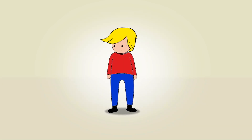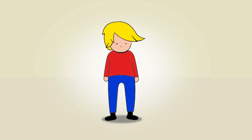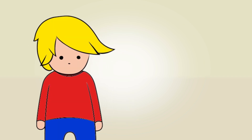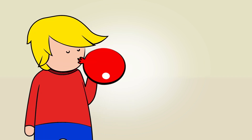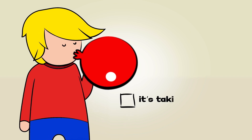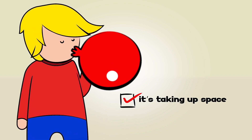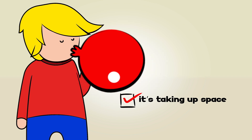Air, like liquid and solid, has mass and can also take up space. Just imagine a balloon. You fill it up with air. The air inside it is taking up space — that's why it expanded. A balloon filled with air has more mass than an empty balloon because it's bigger and is taking up more space.